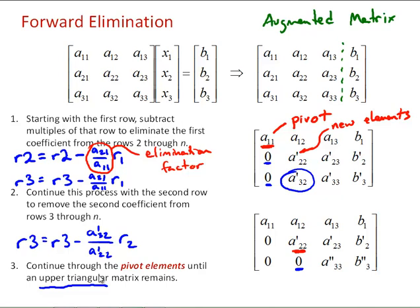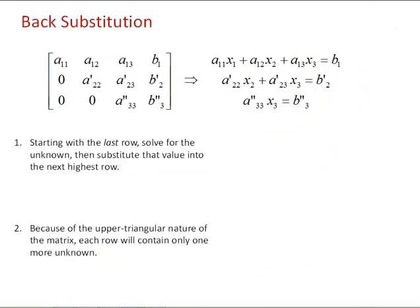Once we have that upper triangular matrix, we can then solve the system with back substitution. With back substitution, we start with the last row, solve for the unknown, then substitute that value into the next highest row. To see how that works, it's helpful to write the augmented matrix back as a linear system of equations. We can solve for the last value x3 as B3'' / A33''.